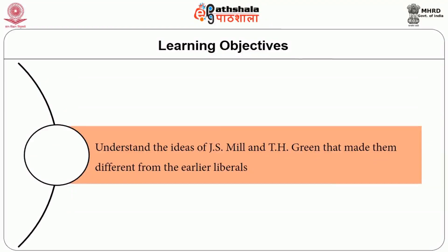These Reformist Liberals include T.H. Green, J.S. Mill, Hobson, Hobhouse, John Rawls and so on. The objectives of the module are to understand the ideas of J.S. Mill and T.H. Green that made them different from the earlier liberals.